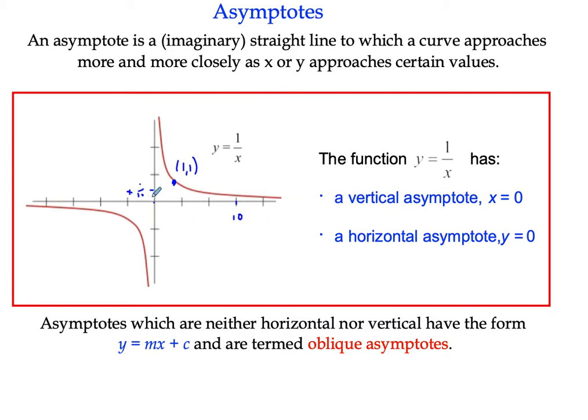As x is 100, y would be 1/100. But as x gets very large, the y coordinate, the curve gets very close to the x axis, but never actually touches it.